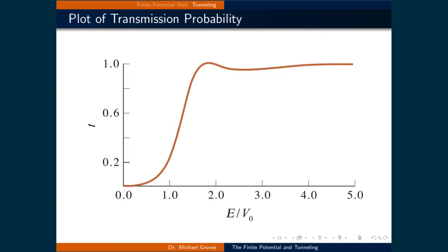Here is a plot of the transmission probability as a function of E/U₀, where U₀ = 10. Any value on the x-axis greater than 1 means the particle has sufficient energy to overcome the barrier without tunneling. The maximum tunneling probability occurs when the particle has an energy about twice as high as the barrier itself, but right after that the tunneling probability dips before slowly climbing back up again.